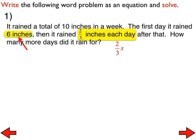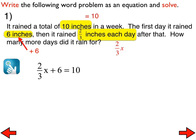Just like all these other word problems we've talked about this year. Two thirds of an inch each day leads to two thirds x. The first day it rained 6 leads to plus 6. And then a total of 10 inches leads to equals 10. I'm going to let you solve it from there.